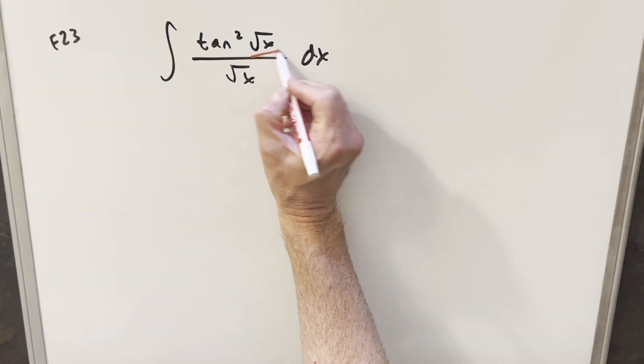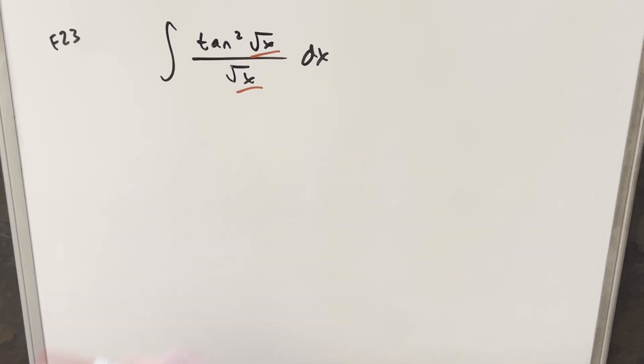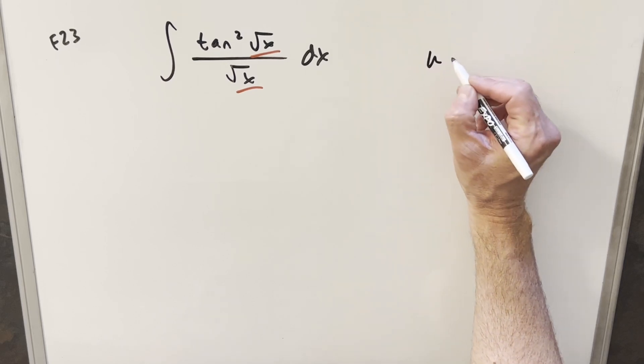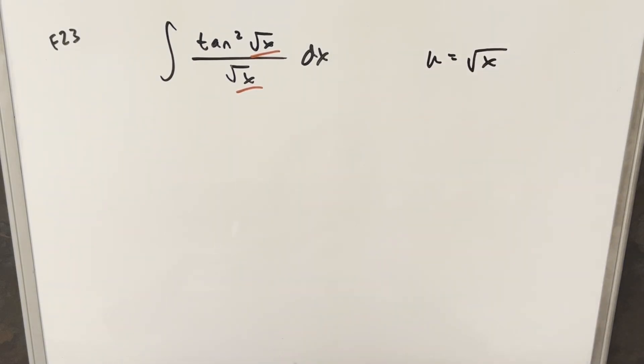Okay, right away we notice that we've got square root of x here, square root of x here, and it seems like if I do a u substitution, it's probably going to simplify pretty quick. So what I'm going to do is just make my u substitution for the square root of x.